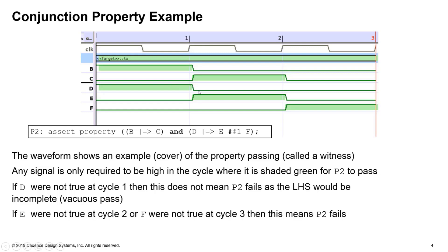If E was not true at cycle two or F was not true the cycle after that, then that would mean the property fails.